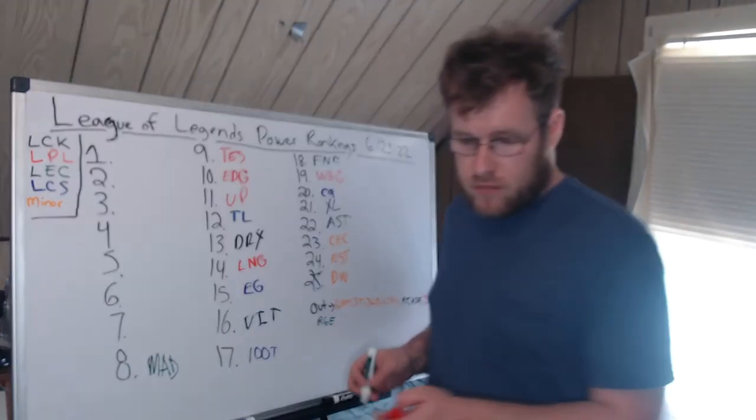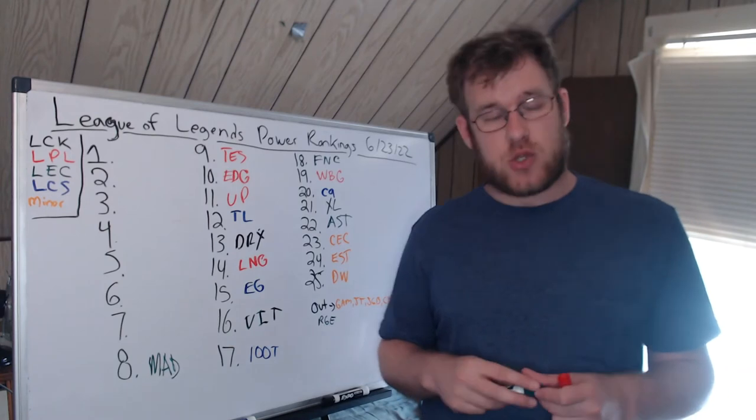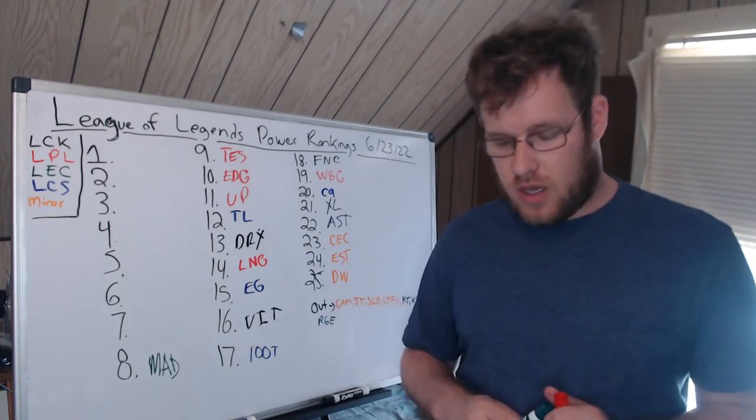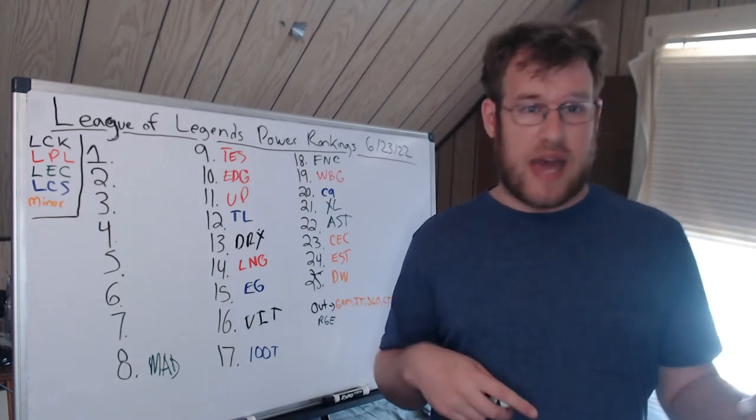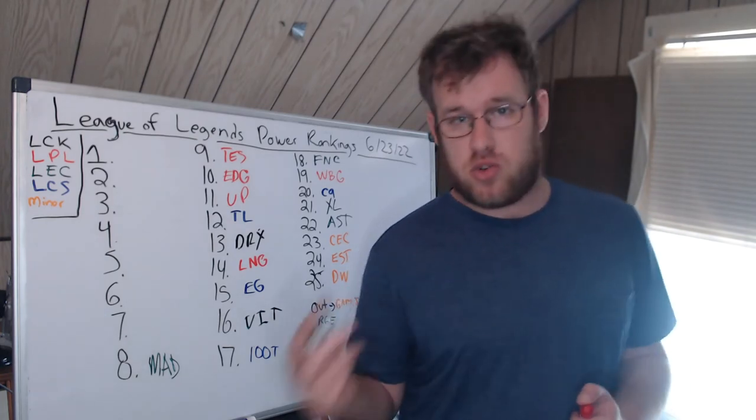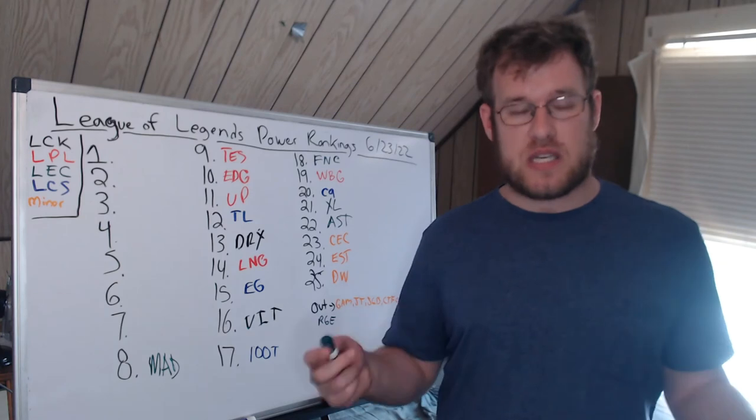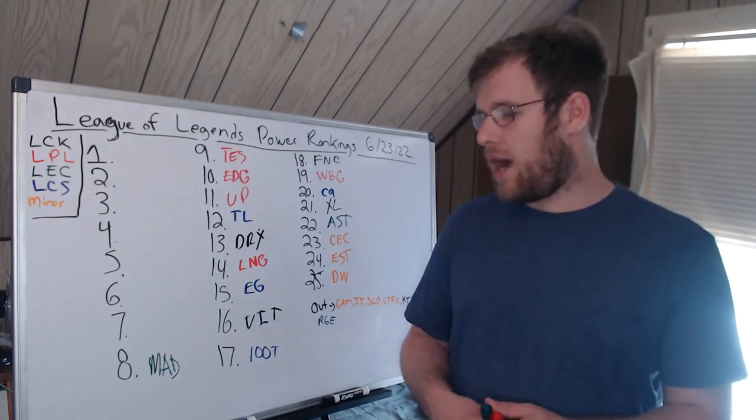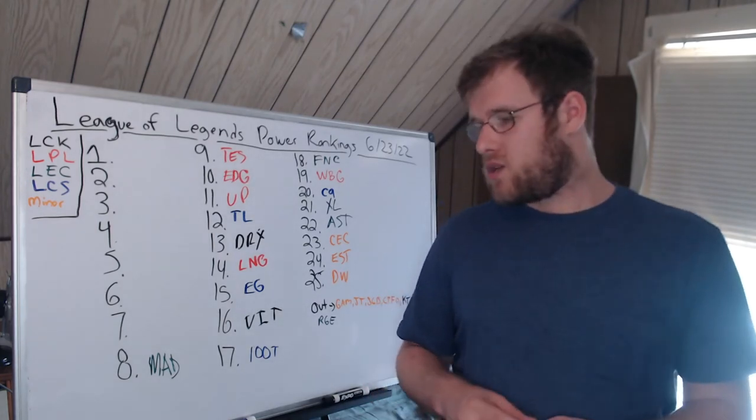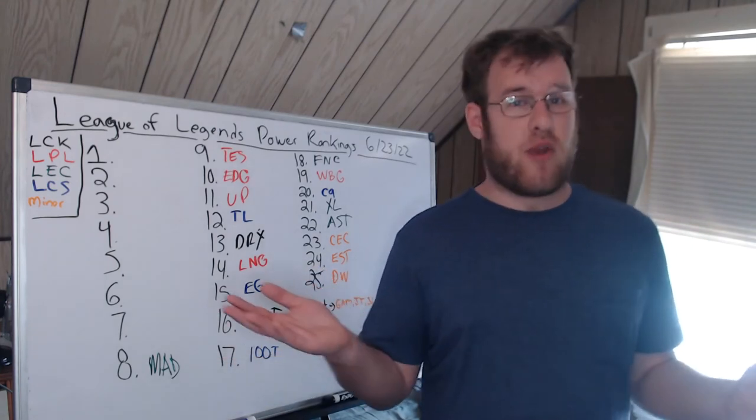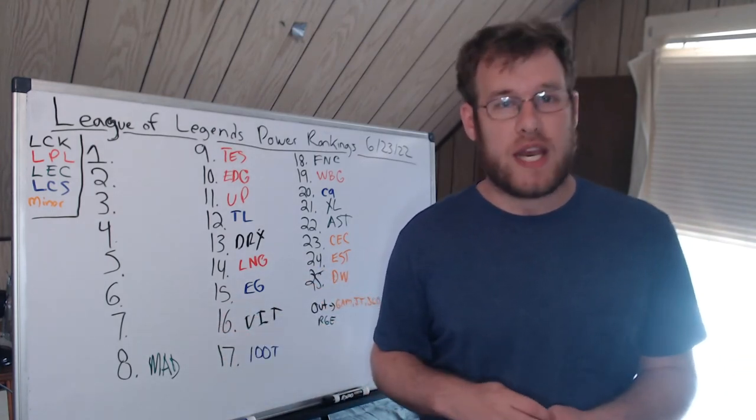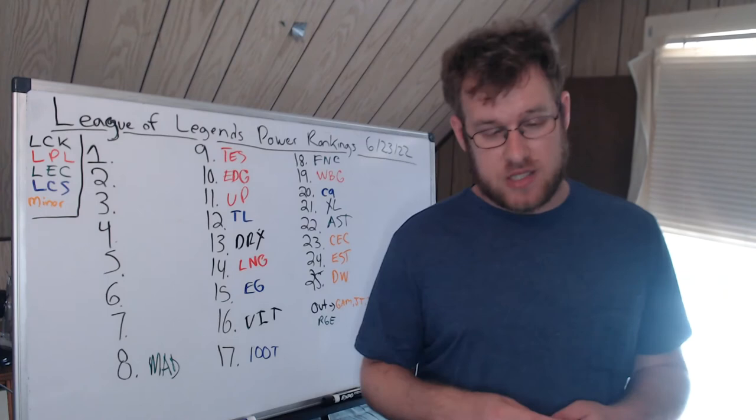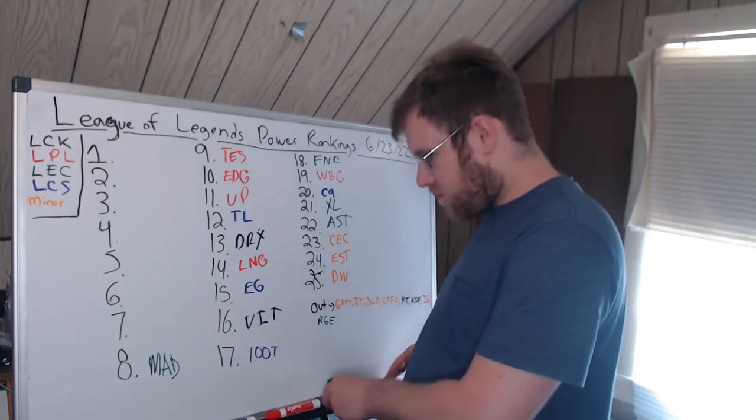Eighth, I have MAD Lions. MAD Lions with Nisqy look very good. This team looks complete—it looks like a complete team. After three games, they look complete. Armut is solid in top, Elyoya is doing very well. Nisqy completes this team with Unforgiven and Kaiser in bot. Kaiser—one of the better supports, I believe, in the LEC and in the West for that matter. I think MAD Lions are a really good team right now. They lost to Rogue on a fight that they should have won. As far as I'm concerned, they should have won that game, so they're eighth place. I think MAD Lions look really nice.